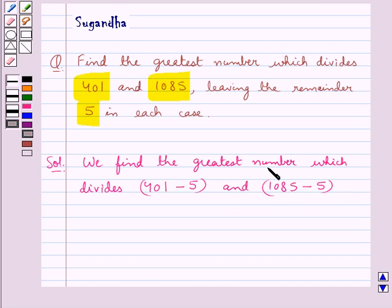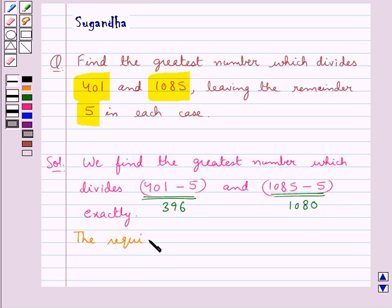This greatest number should divide both these numbers exactly. That is we find the greatest number which divides 401 minus 5 which is 396, and 1085 minus 5 which is 1080. So the required greatest number is given by the HCF of 396 and 1080.